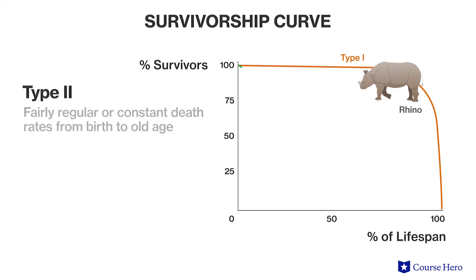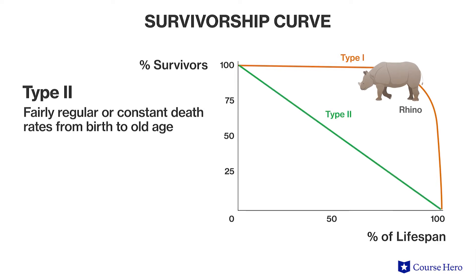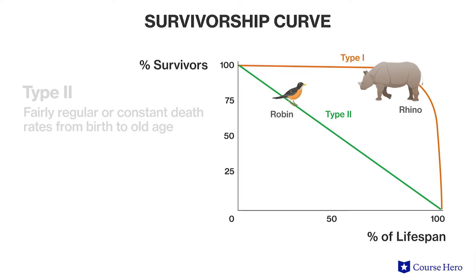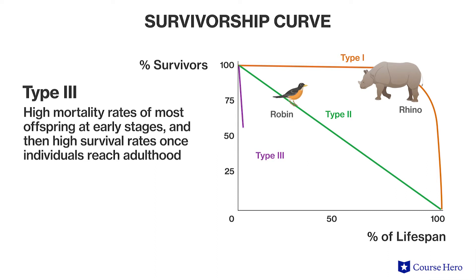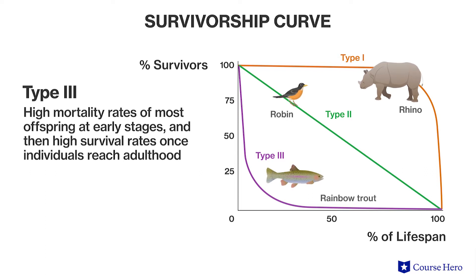Type 2 curves show fairly regular or constant death rates from birth through old age. Birds and squirrels are categorized under type 2 curves. Type 3 curves show high mortality rates of most offspring at early stages and then high survival rates once the individuals reach adulthood. Examples of type 3 species are fish and green sea turtles, which lay large numbers of eggs and spend little or no time parenting, resulting in few offspring that reach adulthood.